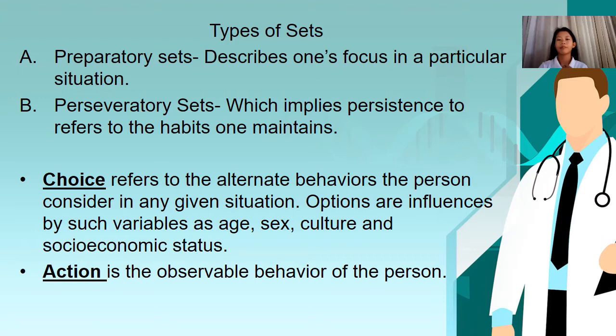Perseveratory sets imply persistence in reference to the habits one maintains. Choice refers to the alternate behaviors a person considers in any given situation; options are influenced by variables such as age, sex, culture, and socioeconomic status. Action is the observable behavior of the person.